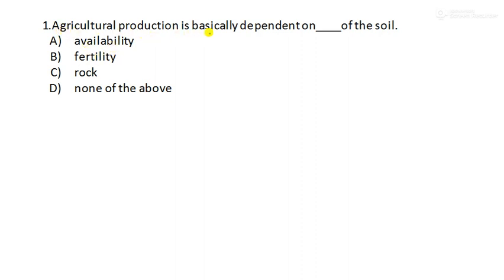Agricultural production is basically dependent on blank of the soil. So soil should be what? It should be fertile. That is the main requirement. Here they have given the options availability, fertility, rock or none of the above. The answer is option number B, fertility.